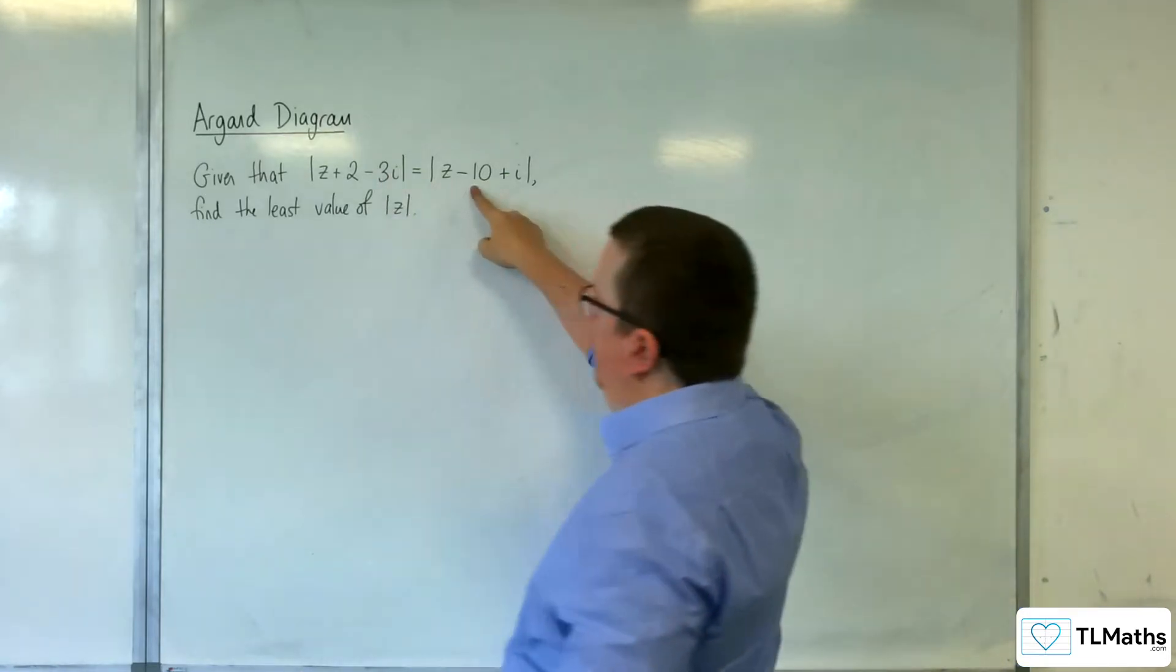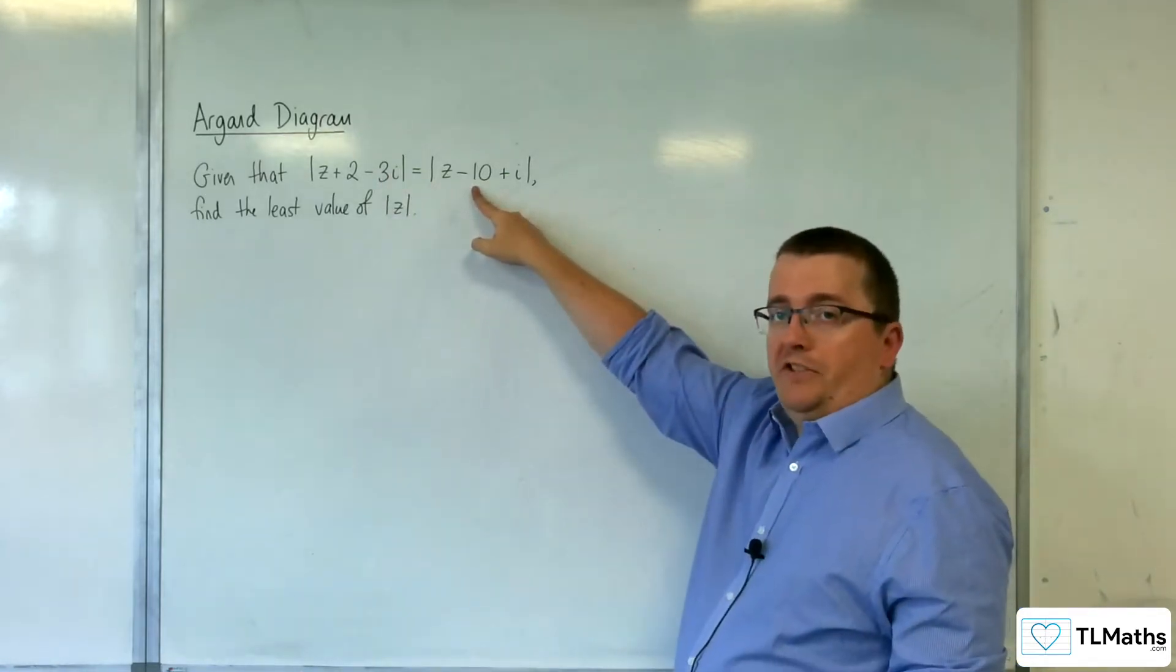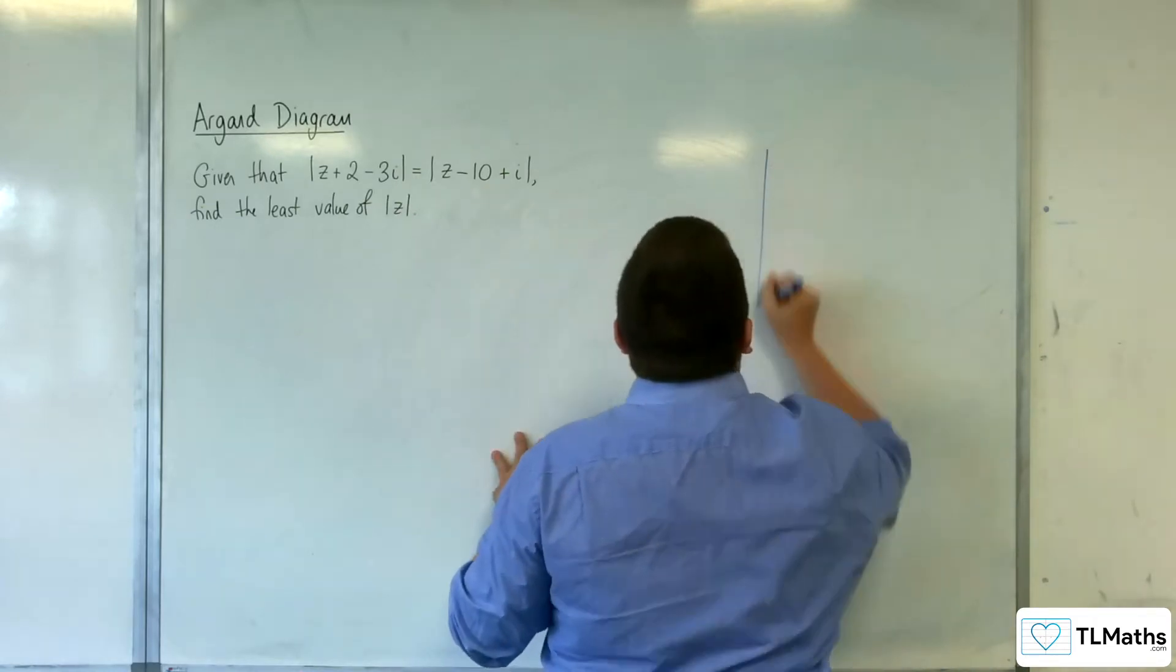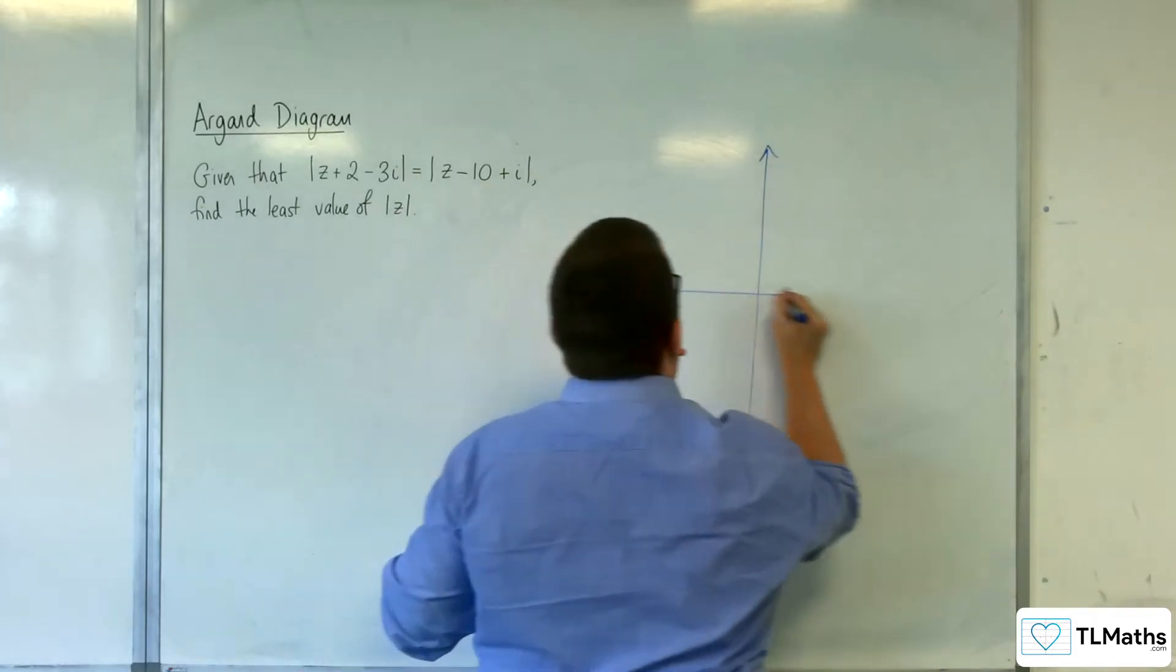Let's understand what that means. This is describing a perpendicular bisector. So let's draw a sketch so we can visualize what's happening here.